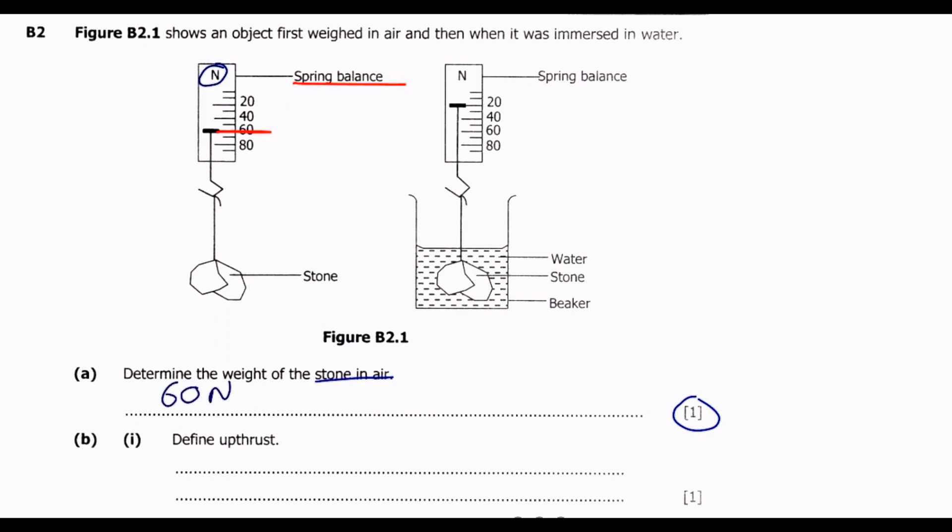That's how you get the one mark. Part B, Roman numeral 1: define upthrust. The other term that you might have used is also known as buoyant force. Either they use upthrust or they use the buoyant force. So what is it? This is the upward force exerted by a liquid when an object is immersed in it.